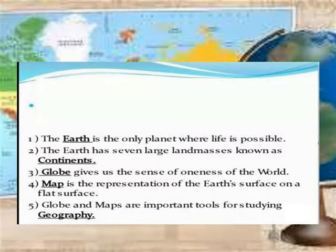The Earth is the only planet where life is possible. The Earth has seven large mountains, known as continents. The globe gives us the sense of the oneness of the world. The globe and map are important to study in geography.